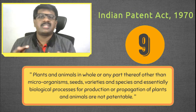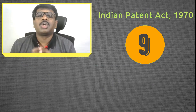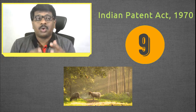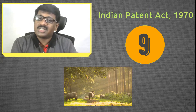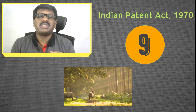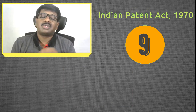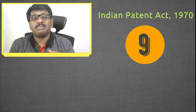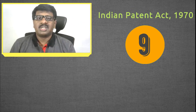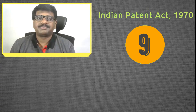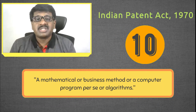In India, you cannot patent plants, animals, seeds, species, or spices — any such related things. Most of you must have heard about a famous sheep called Dolly, the first ever mammal that was cloned in the world. In India you cannot patent Dolly because it falls under this category. Any plants, animals, seeds, or microorganisms cannot be patented in India. However, if a microorganism has been formed because of human intervention — a man-made microorganism — then it can be patented. But anything found in nature cannot be patented.